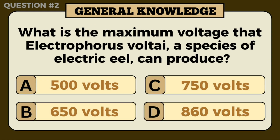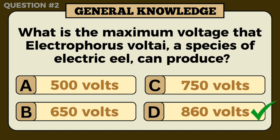What is the maximum voltage that Electrophorus Voltae, a species of electric eel, can produce? Answer: 860 volts.